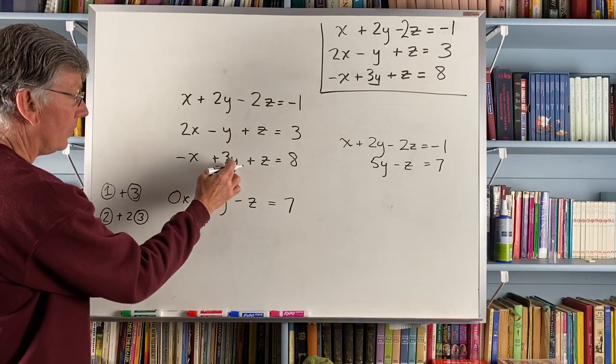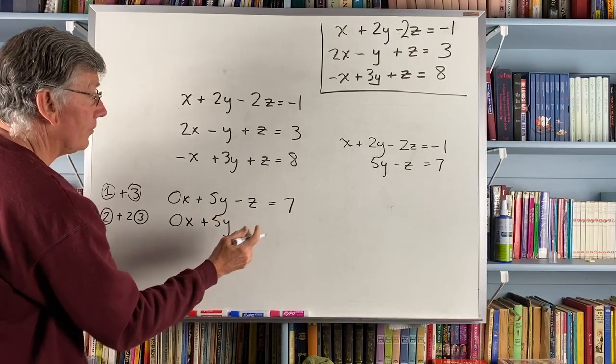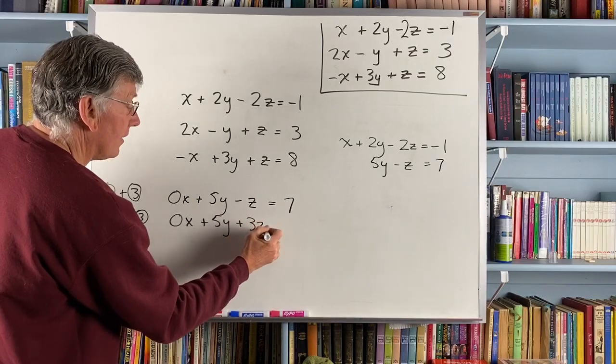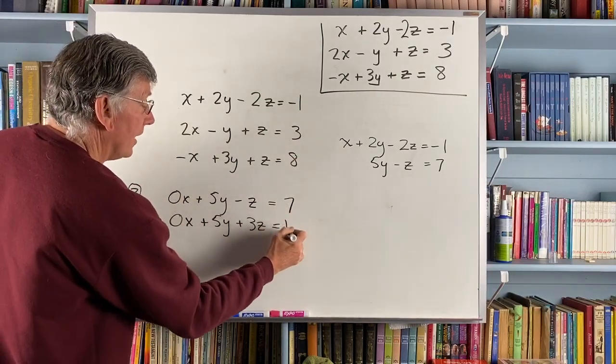Minus y plus 6y gives me a 5y. Z plus 2z gives me a 3z. And 3 plus 2 times 8 gives me 19.